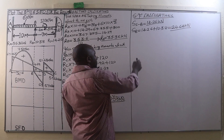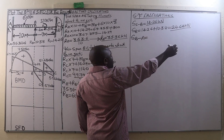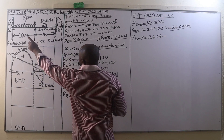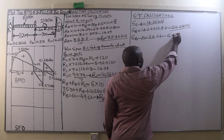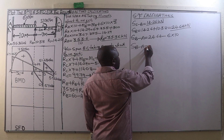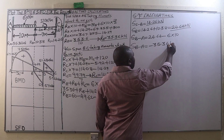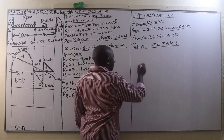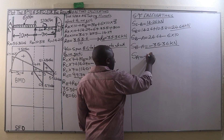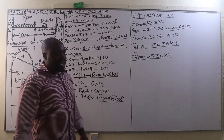The shear force between B and A is going to change uniformly from 24.64, minus the UDL from B to A converted to a point load — that is 6 times 10, which is 60. So the shear force between B and A is 24.64 minus 60, that is negative 35.36 kN. The shear force at A is also negative 35.36 kN.